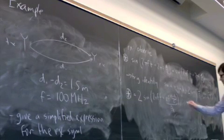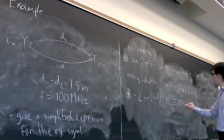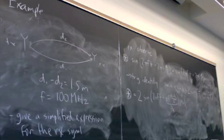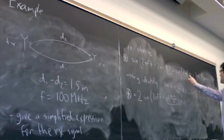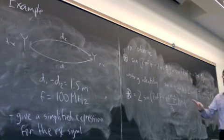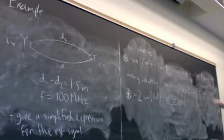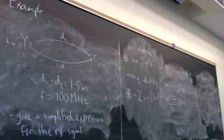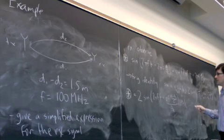The other term, cos (a minus b). 2πft minus 2πft is 0. 2πf d1 over c minus 2πf d2 over c divided by 2.